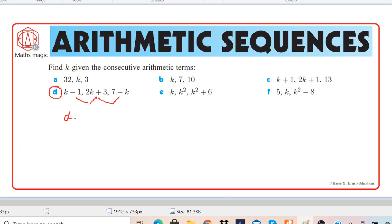So let's find common difference of consecutive terms. We can find u2 minus u1. So u2 over here is 2k plus 3 and u1 is k minus 1.